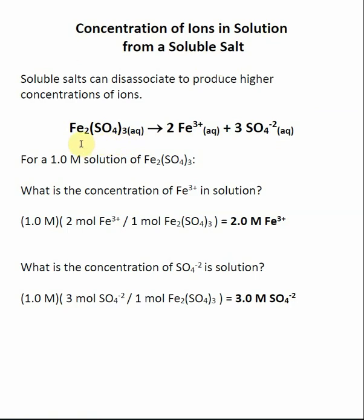Remember, by definition, a soluble salt dissociates 100%. So there's going to be very little of our iron(III) sulfate remaining — almost all of it dissociates to make Fe³⁺ and SO₄²⁻. That's what we're interested in, because those are the species involved in our reactions. When we look at iron(III) sulfate, there are multiple irons and multiple sulfates inside one formula unit, so soluble salts can dissociate to produce higher concentrations of ions.